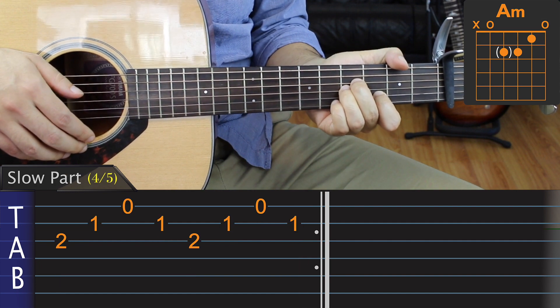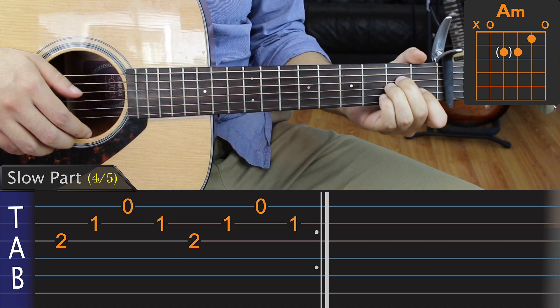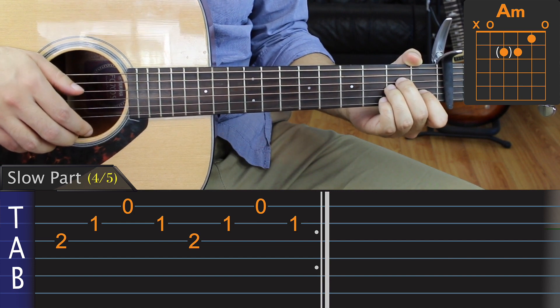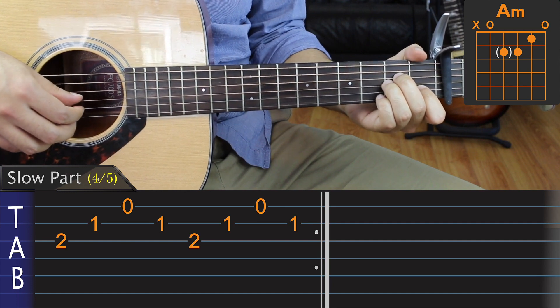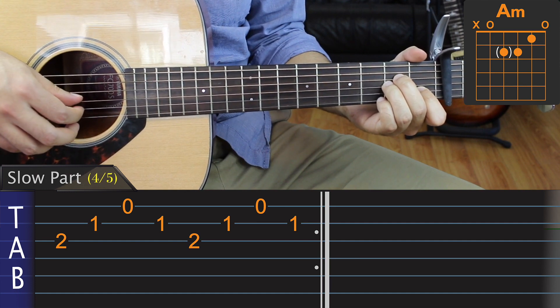We then slide down two frets to make a proper A minor chord, and with our picking hand, we play the G, B, and E strings with our thumb, index, and middle finger. We'll use the same pattern as before and play it four times.